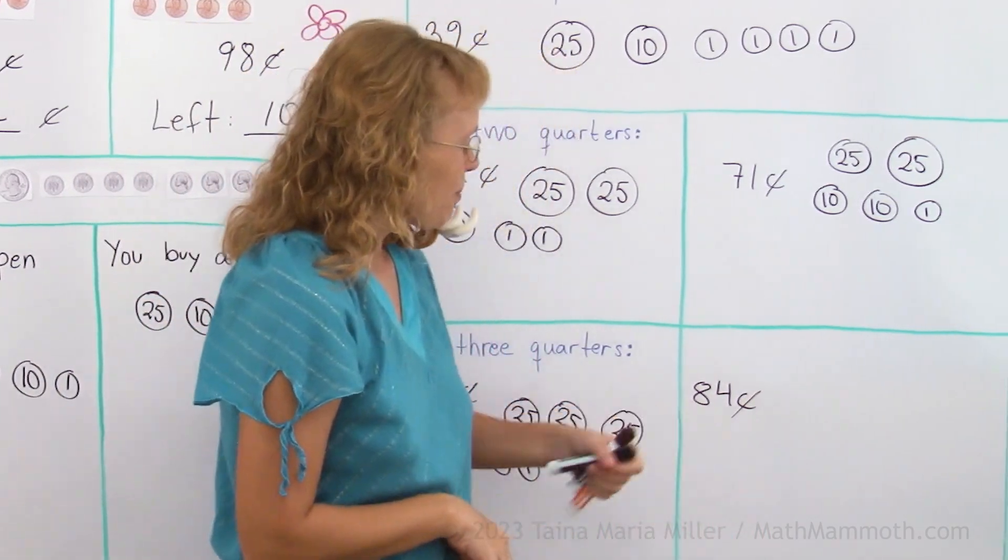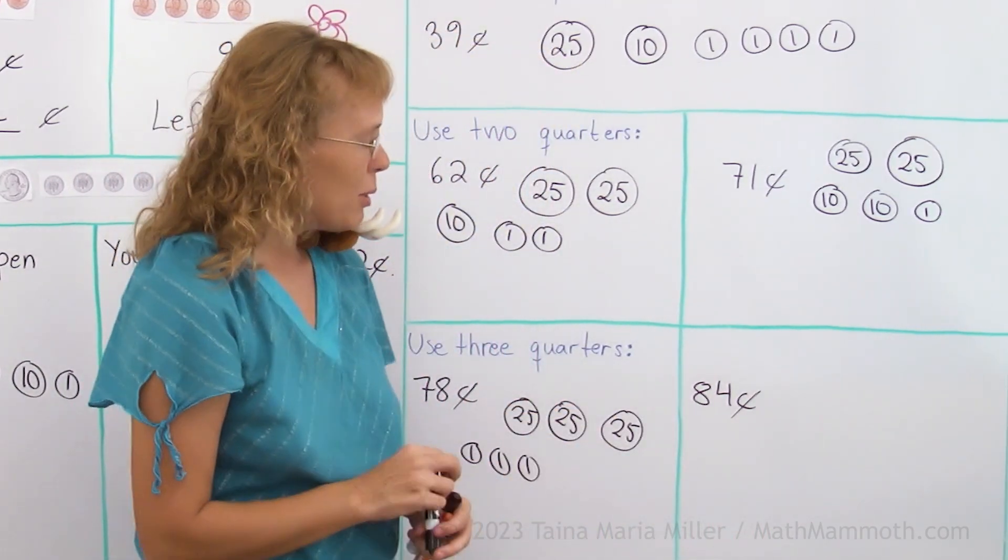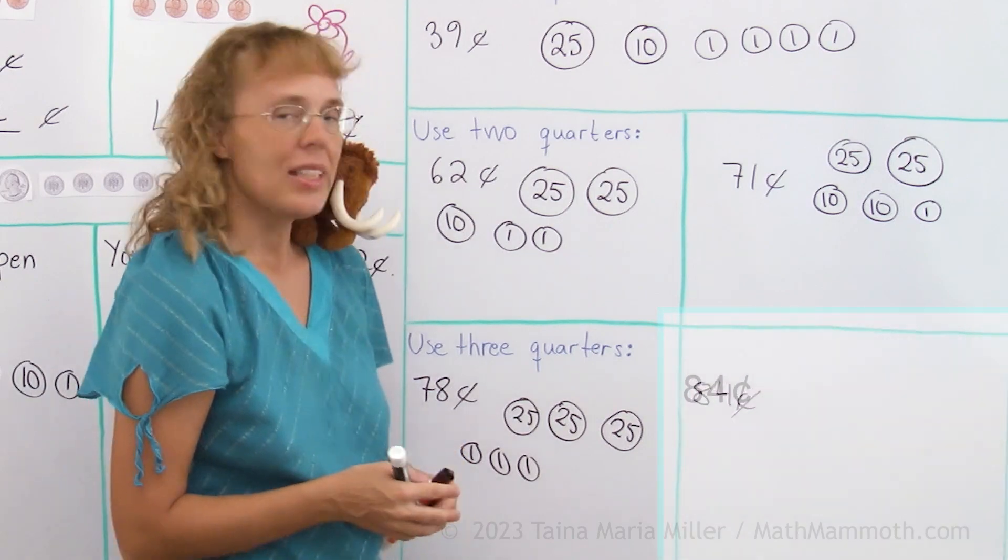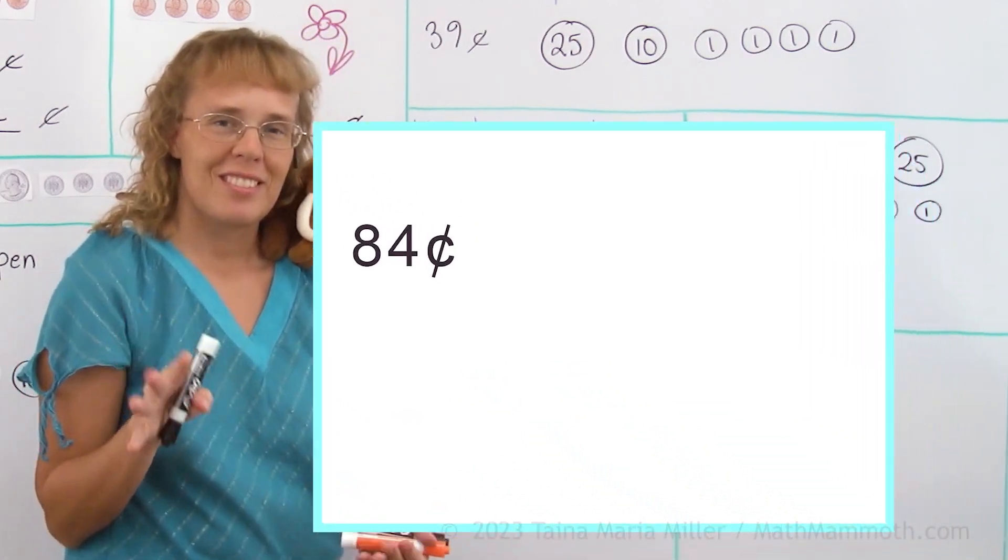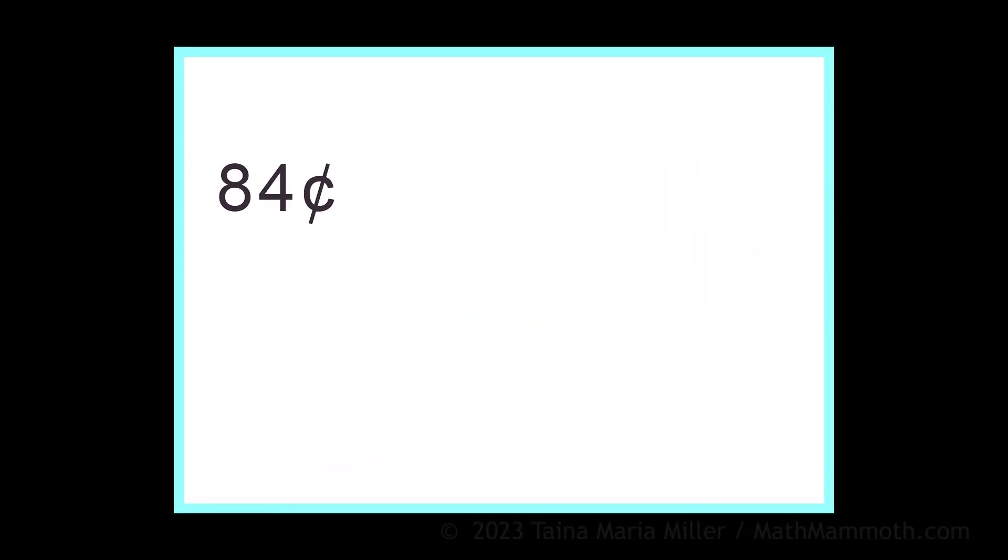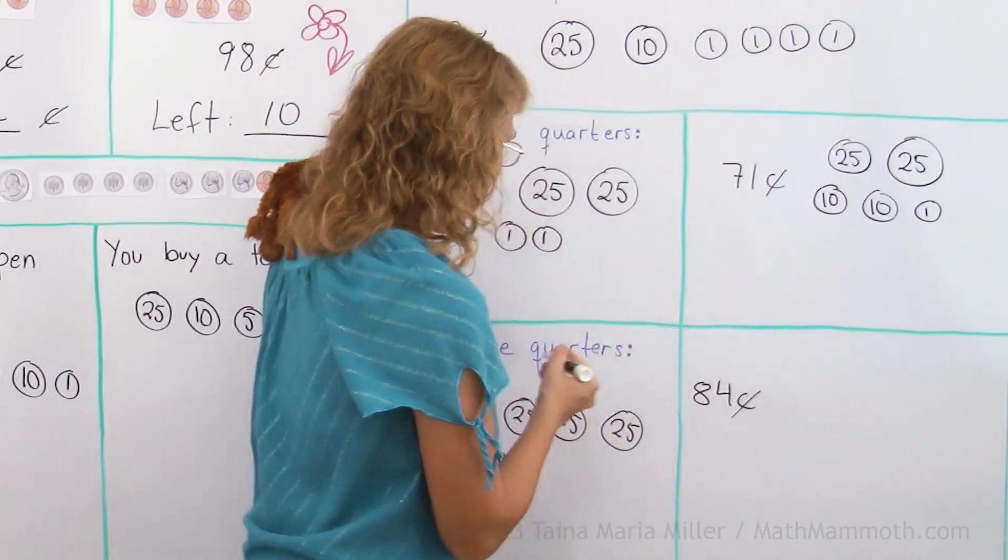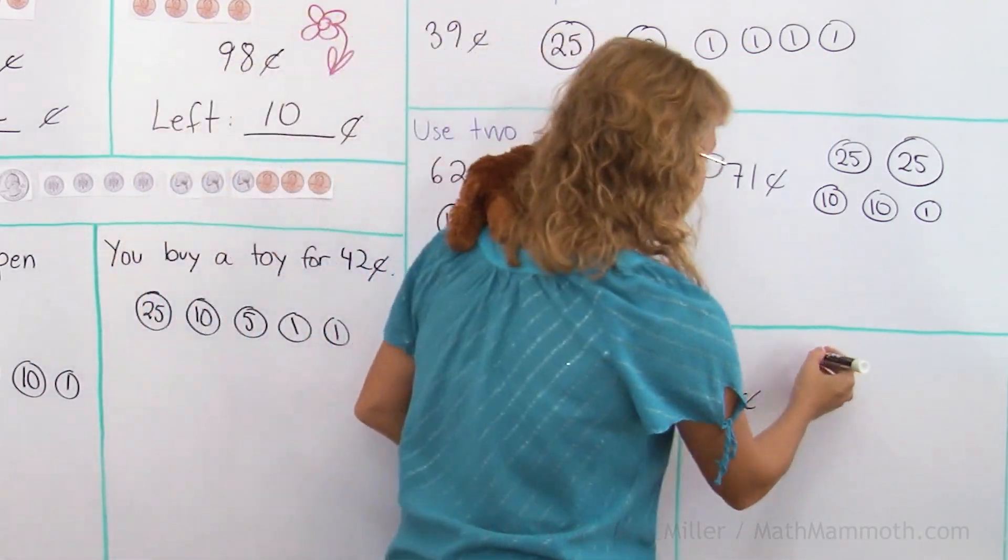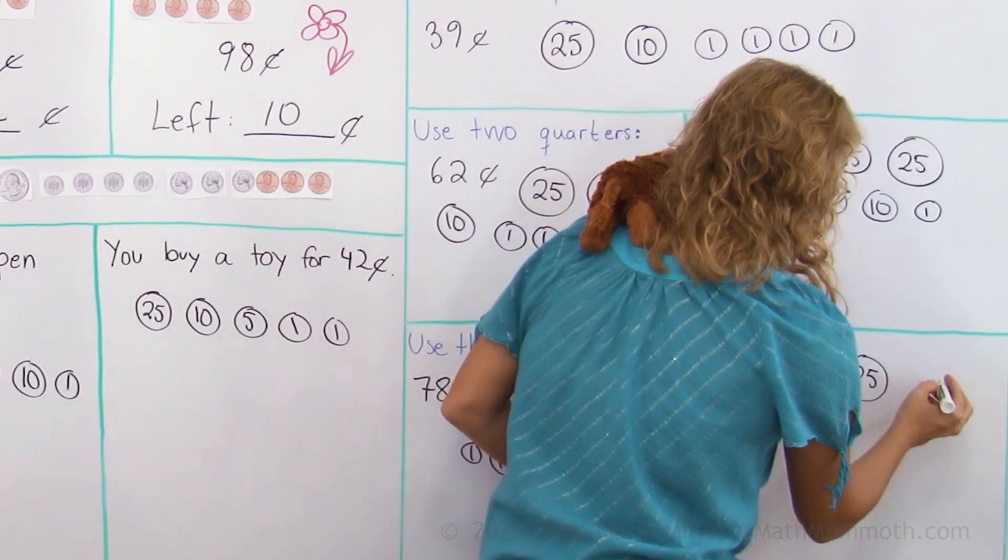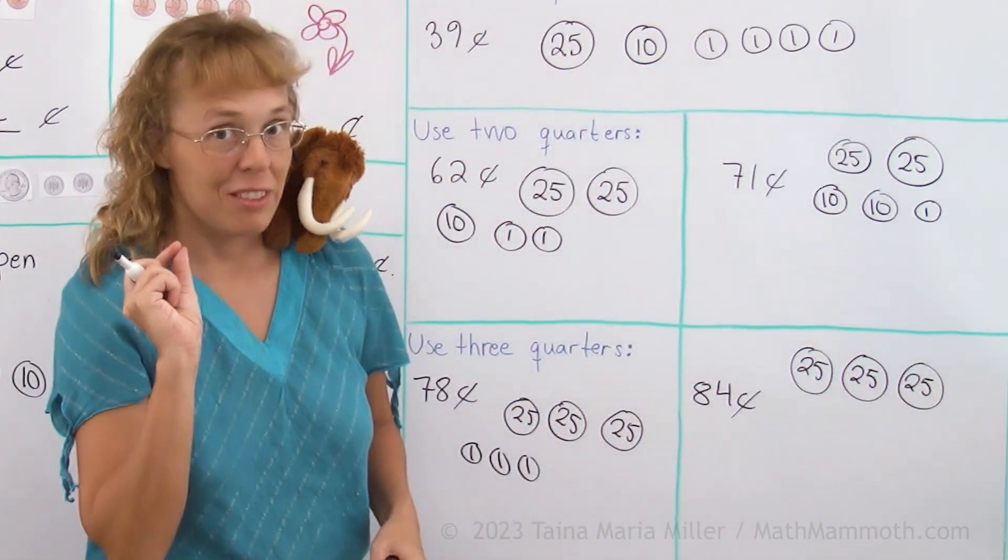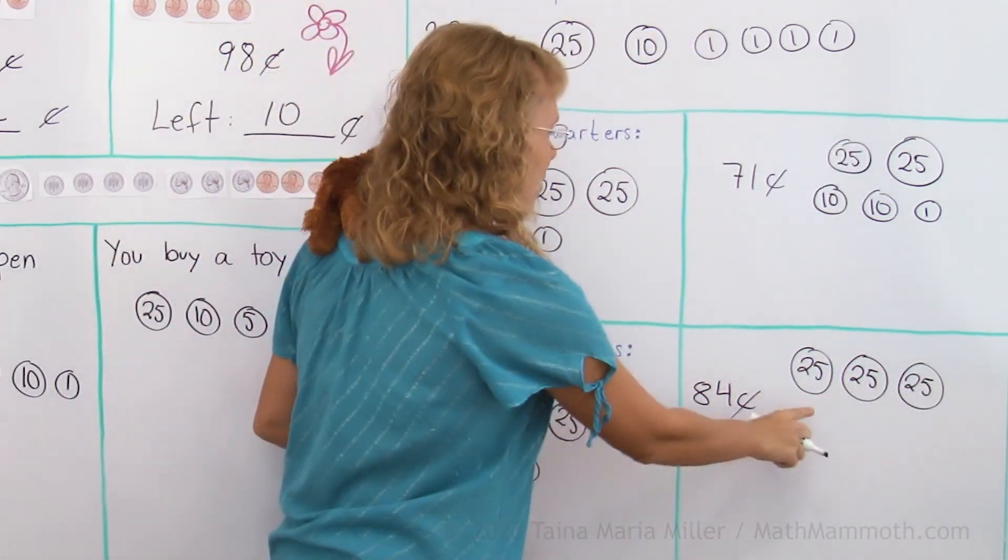And lastly, 84 cents. What would it be? Think about it, pause the video and try to solve it yourself. Again, I'll use three quarters, and that was 75, right, 75.